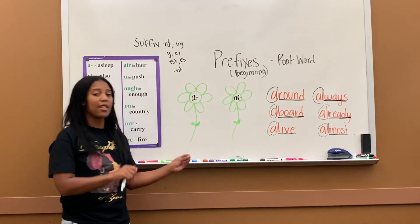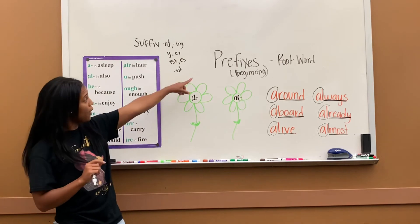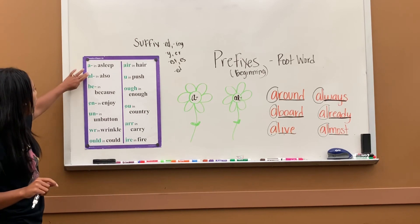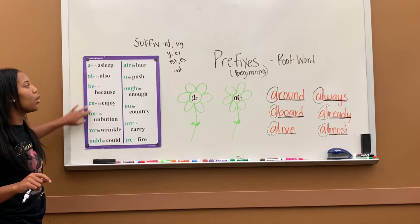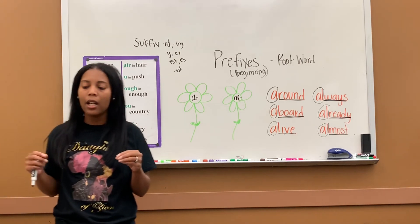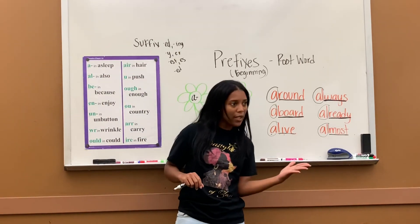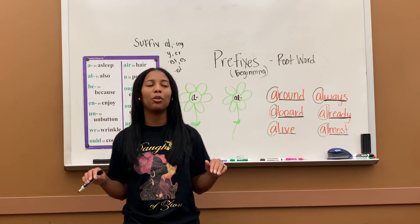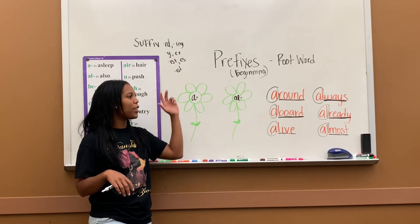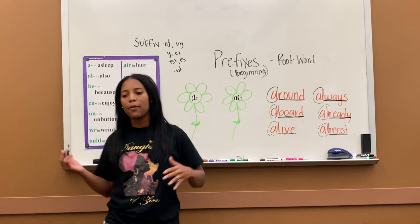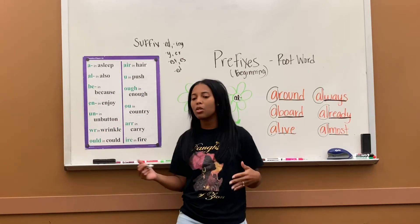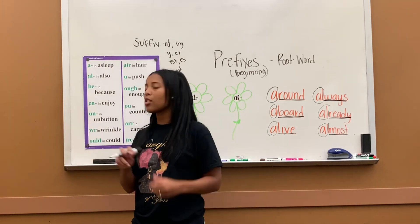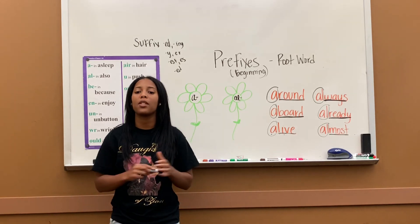So remember, suffixes go at the end of the word, but a prefix goes at the beginning of a word. These — AL, BE, EN, UN — are all prefixes that go at the beginning of a word. Now we know suffixes and prefixes. Suffix is end of a word, prefix is beginning of a word. We will practice more prefixes this week. It's pretty easy because we mark it the same: underline the root word, circle the prefix. You can do your work on pages 111 and 112 today. That's our 5x lesson.